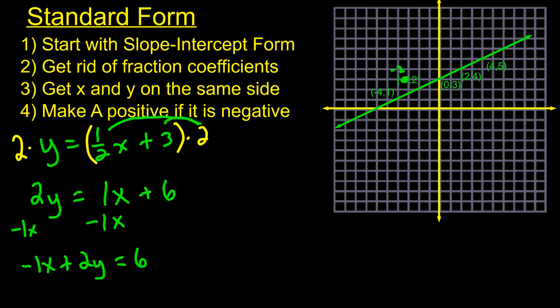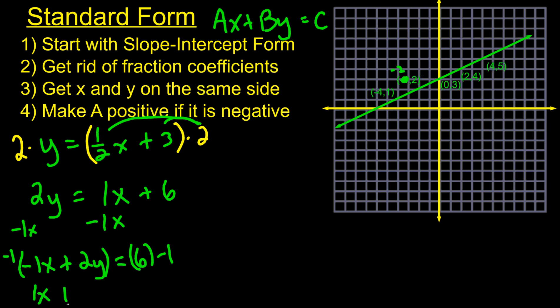This is in standard form — ax plus by equals c — where a is -1, b is 2, and c is 6. However, in standard form a should be positive. Since a is negative here, we multiply everything on both sides by negative 1. The negative 1 distributes in and we get x minus 2y equals negative 6. That is the equation for that line in standard form.